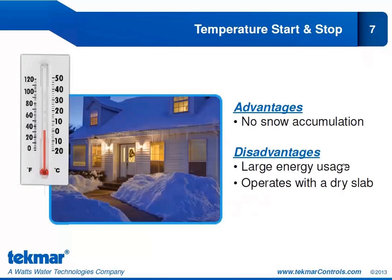You could also go for the temperature-based start and stop. Once we drop below a certain temperature — maybe below freezing — our snowmelt system turns on, and it doesn't turn off until we are above freezing again. The advantage is there is no snow accumulation; our slab is always warm and always ready to melt. The disadvantage is this method uses a lot of energy, as it's on for the entire snowmelt season. Typically it only snows for about 10% of days when we are below freezing, so for the other 90% we are wasting energy running on a dry slab. However, in some cases you might choose this if you prioritize safety over operating cost.